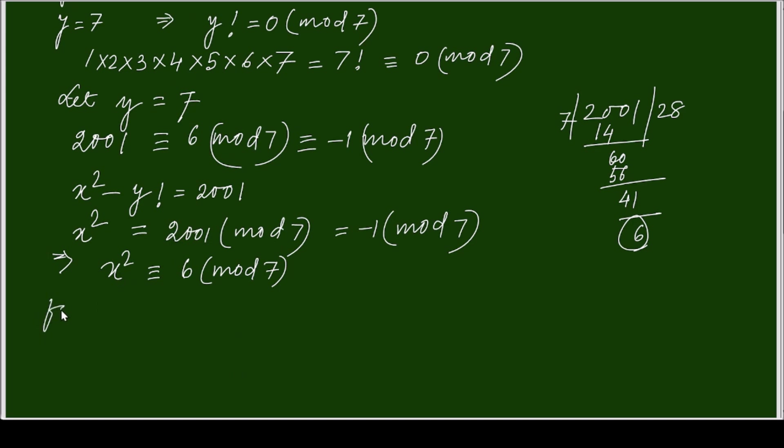So, I repeat, for y greater than equal to 7, I am getting x square is congruent to 6 modulo 7. Now let us analyze x square.